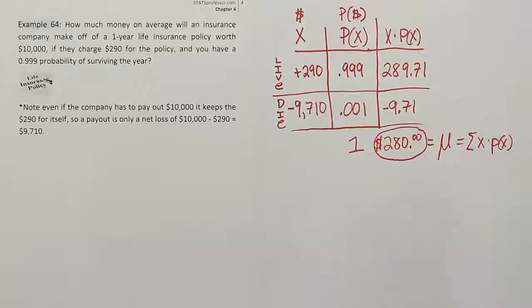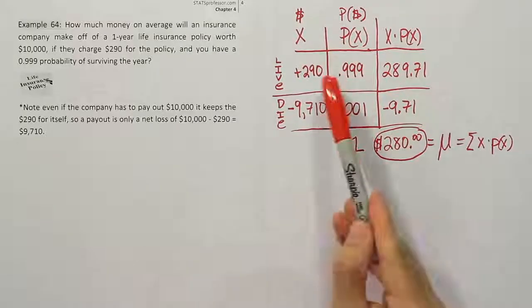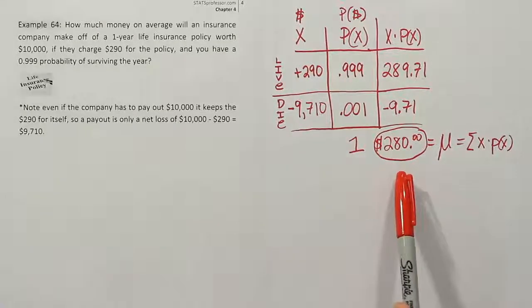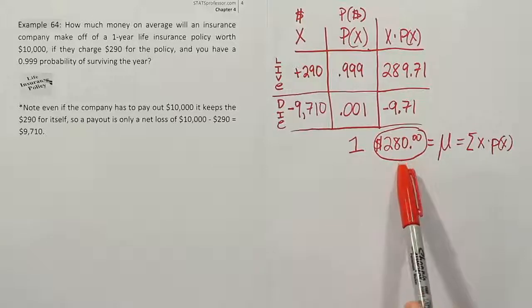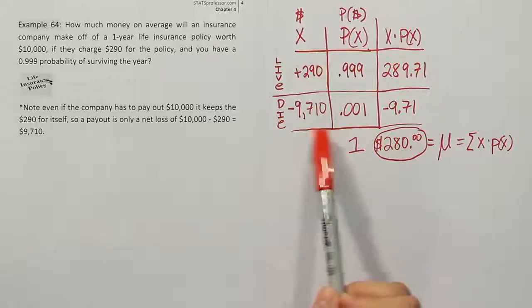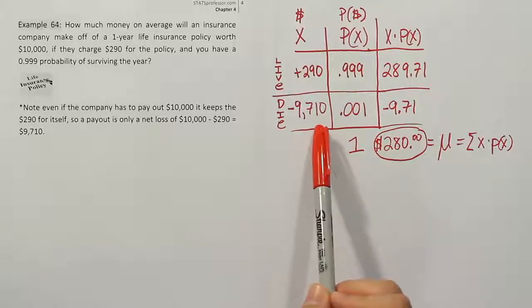So the answer to the question is $280. On average, the company will make $280 per policy sold. Now, of course, on an individual policy, they can't make $280. They either make $290 or they lose $9,710. But what this is saying is that over the course of a lot of sales, at the end of the year when they look at their books, they'll see lots of plus $290s and then some places where they have minus $9,710 where unfortunately some of their customers passed away.